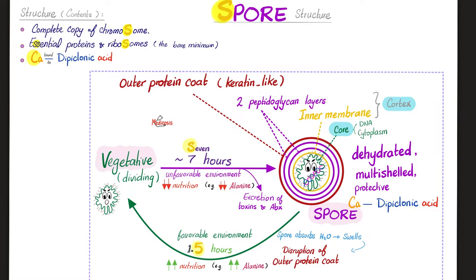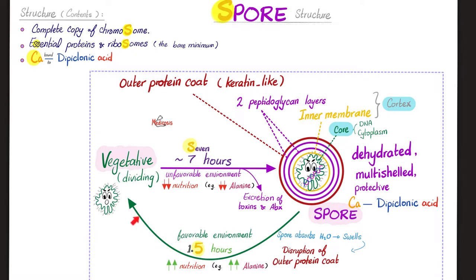From the inside to the outside, the spore contains: the bacterial DNA at the very core, then the cytoplasm, then the inner membrane (the plasma membrane), then the cell wall — peptidoglycan — in two layers. A pearl for the pros: spores are only made by gram-positives, which have a thick peptidoglycan wall, hence the two layers. Outside that is an outer protein coat made of keratin, which is very strong — just like your nails and hair. When bacteria detect unfavorable conditions, it takes about seven hours to make a spore, but only one and a half hours to dismantle it once conditions become favorable again.